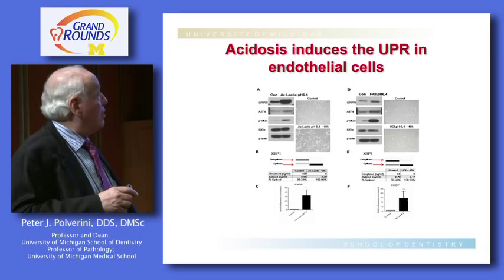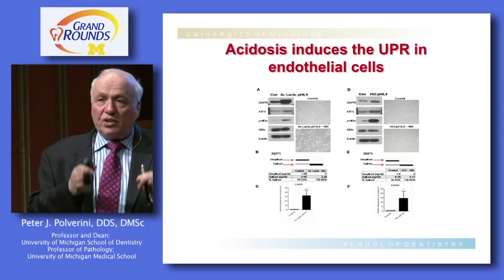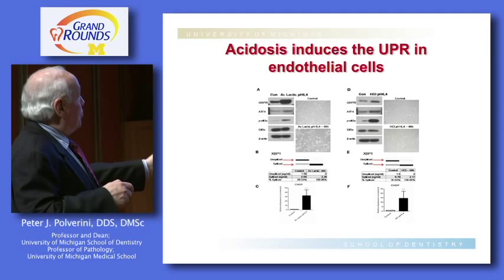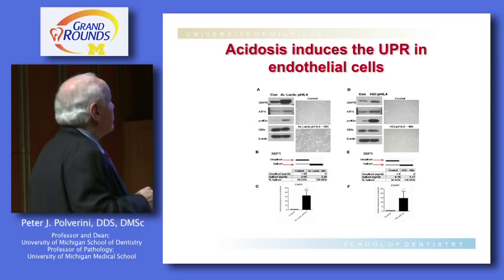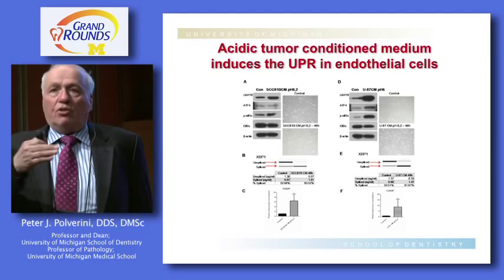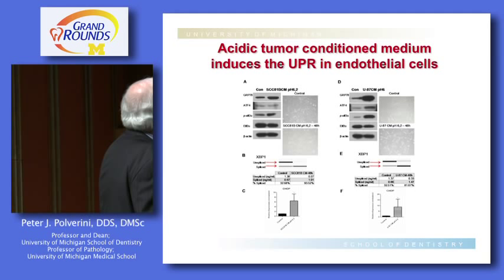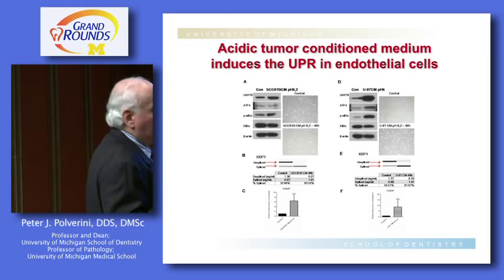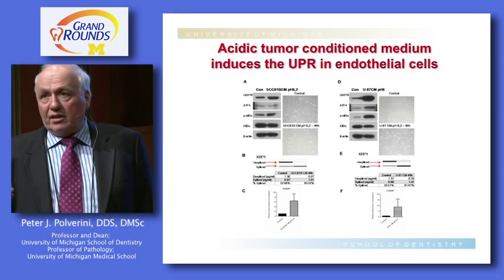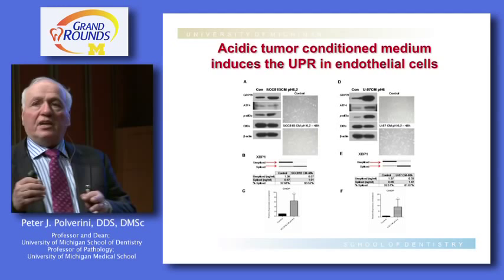We know these proteins are upregulated. We're not sure yet what they're doing. The Xbox binding protein is spliced, all of these indicating activation of the response. We also know that if we take tumors and allow their media to become acidic, rather than adding acid directly, we see the same thing — activation of components of the unfolded protein response. Acidified tumor conditioned media behaves very similarly, suggesting the tumor itself is capable of generating and activating this particular response in blood vessel cells.